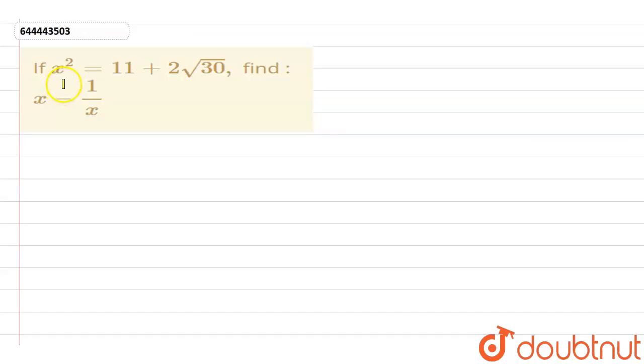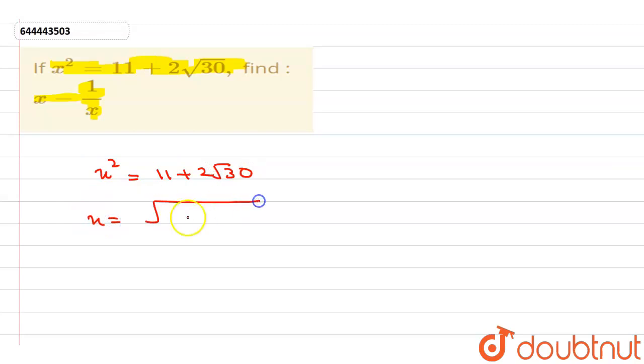Hello students. In this question we have given that x squared equals 11 plus 2 root 30, and we need to find the value of x minus 1 by x. So basically, we have given that x squared equals 11 plus 2 root 30, so we can write x equals under root of 11 plus 2 root 30.